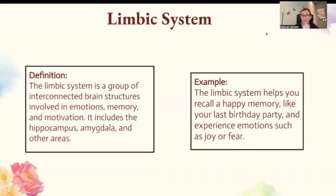The limbic system. The limbic system is a group of interconnected brain structures involved in emotions, memory, and motivation. It includes the hippocampus, amygdala, and other areas. The limbic system helps you recall a happy memory like your last birthday party and experience emotions such as joy and fear.